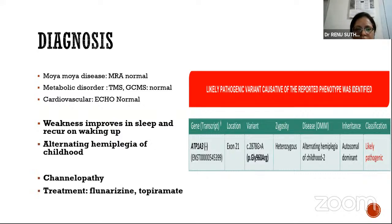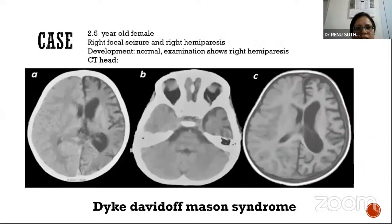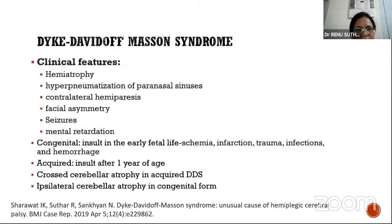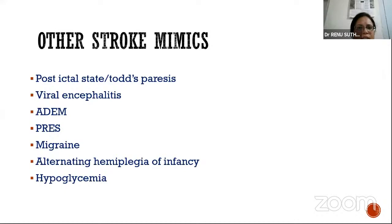Alternating hemiplegia of infancy was confirmed genetically — an autosomal dominant disease with mutation in the ATP1A3 gene. Treatment is usually different, responsive to flunarizine and topiramate. Other stroke mimics include Dyke-Davidoff-Masson syndrome, where there is an insult in the infantile or fetal period presenting like hemiplegic cerebral palsy with hemispheric atrophy and thickening of ipsilateral bones and sinuses. Additional mimics include Todd's paresis, viral encephalitis such as herpes, ADEM, PRES, migraine, alternating hemiplegia of infancy, and hypoglycemia.